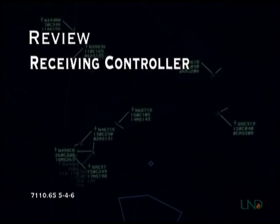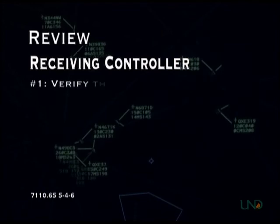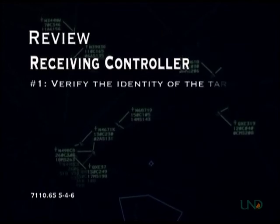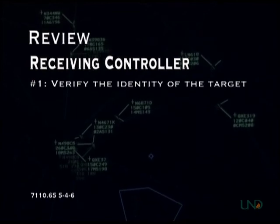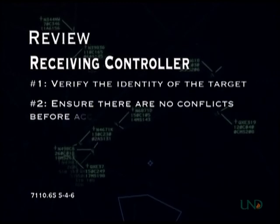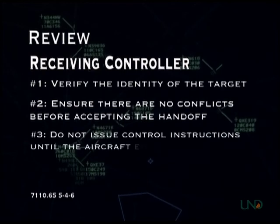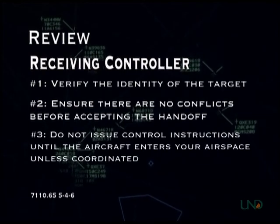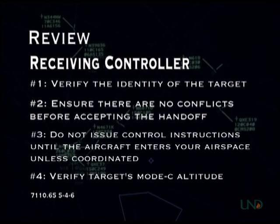The controller receiving the transfer of radar identification has four responsibilities. First, the identity of the target must be confirmed, either by using a data block or by observing the target in the location specified by the transferring controller. Second, the controller must ensure separation from other traffic before accepting the handoff. Third, any control instructions issued before the aircraft enters the receiving controller's airspace must be coordinated with the other controller. Finally, the aircraft's mode C altitude must be verified.